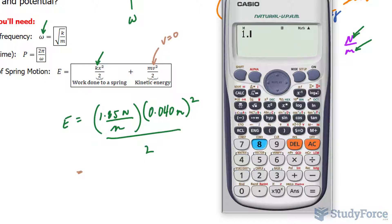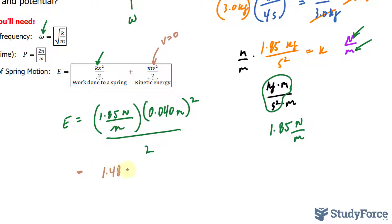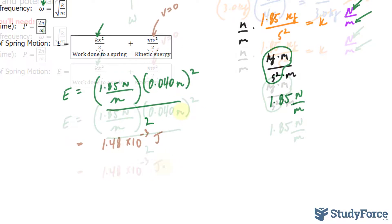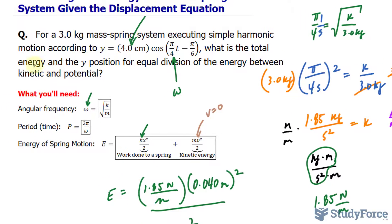We should get an answer that's in joules for energy. 1.85 times 0.040 to the power of 2 divided by 2, and our answer is 1.48 times 10 to the power of negative 3 joules. That is the answer for the first part.